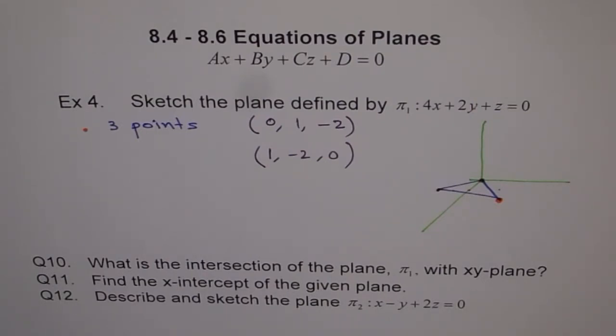Find the x-intercept of the given plane. Describe and sketch a plane which is similar to this. x minus y plus 2z equals to 0. Try to answer these questions and let's see if you have really understood the concept. Okay?